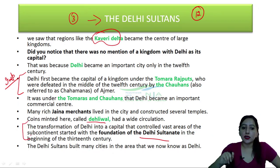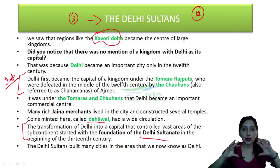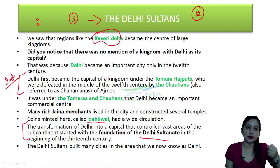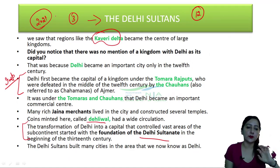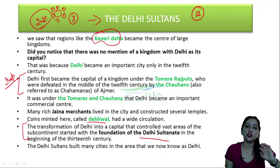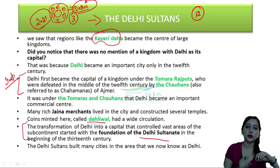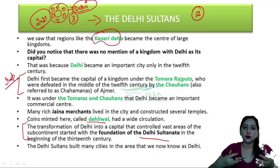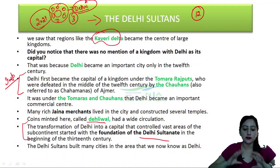The Delhi Sultanate built many cities in the area we know as Delhi. If you look at Delhi in 2021, it is a very big area. The Delhi Sultanate built many small cities here, and these cities have been combined and added to form modern Delhi. Cities like Shahjahanabad and Tughlaqabad were built by the Delhi Sultanate, and so Delhi as a whole grew slowly over time.